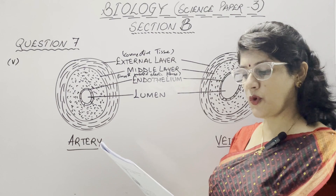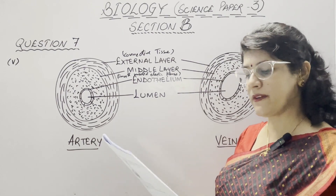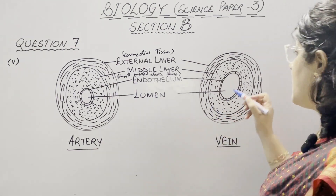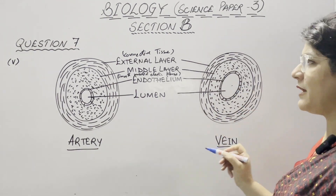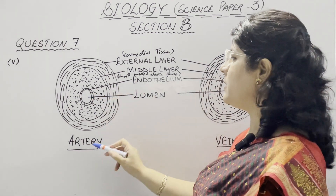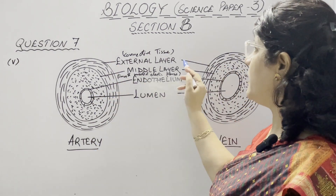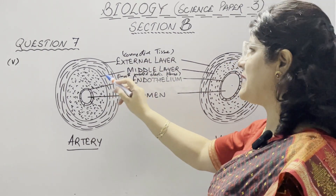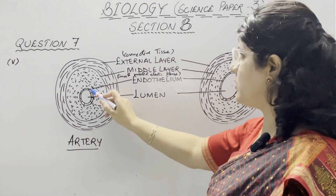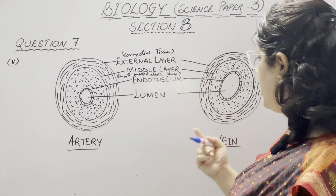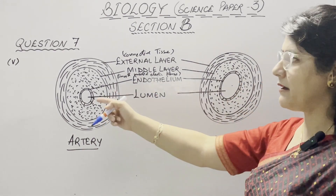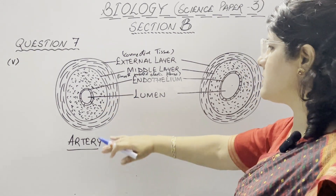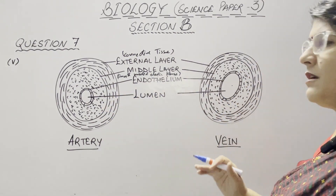In part five, draw neat labelled diagrams showing the cross-sections of an artery and a vein. The main difference is the lumen width: wider lumen means it is a vein, and narrower lumen means it is an artery. Both have an external layer of connective tissue, a middle layer of smooth muscle and elastic fibers, and an inner endothelium. Thick muscular walls indicate an artery; thin and less muscular walls indicate a vein.